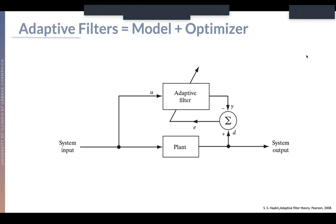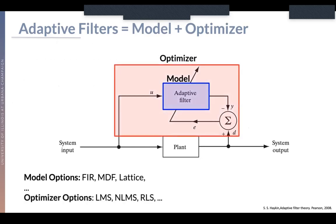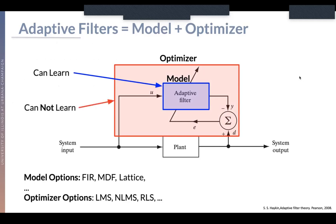At their core, adaptive filtering algorithms are made up of a model — the adaptive filter, which is typically some sort of linear filter — and the optimizer, which is typically some sort of derived or otherwise configured LMS, NLMS, RLS, or other gradient-based update. Typically, we can think of this model as being learned, and we fit it to some incoming data stream, whereas the optimizer is not learned — it's developed and derived ahead of time in order to fit the model.